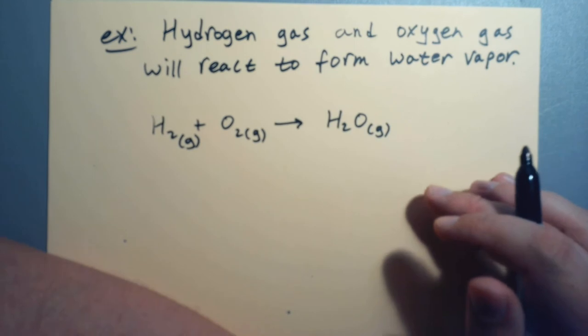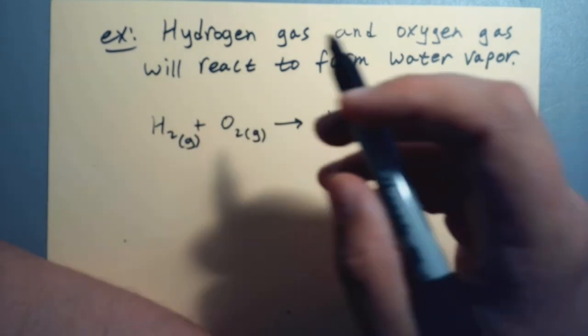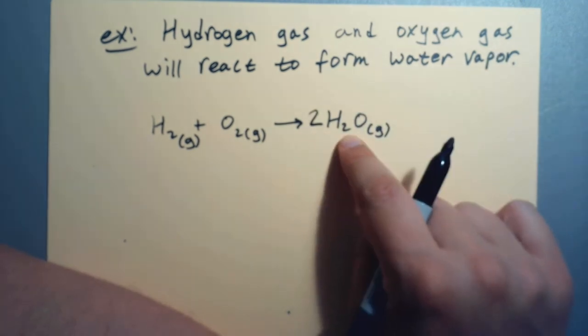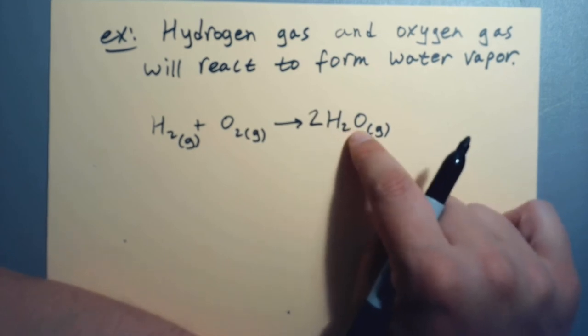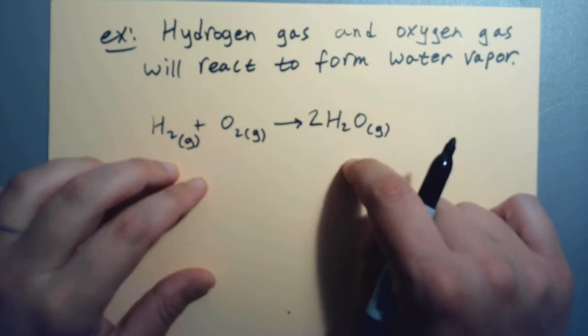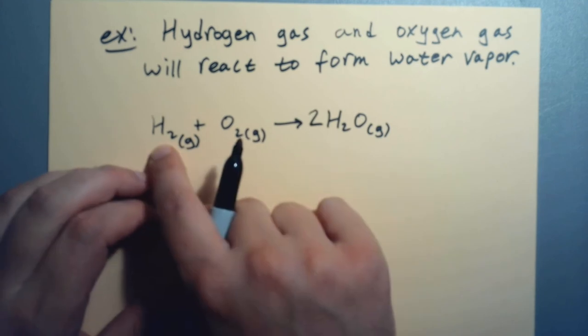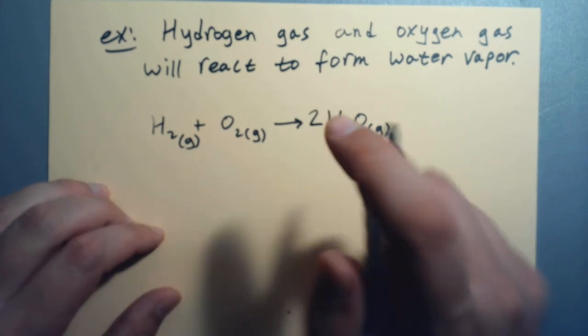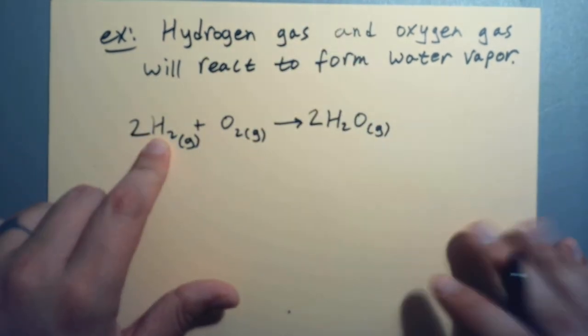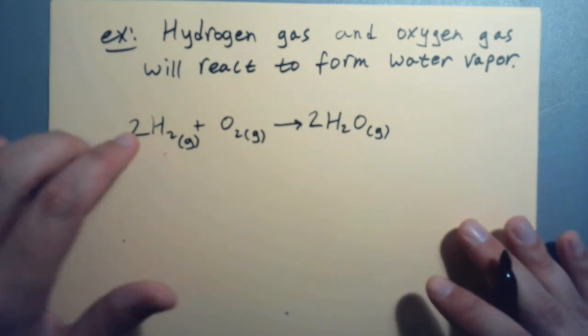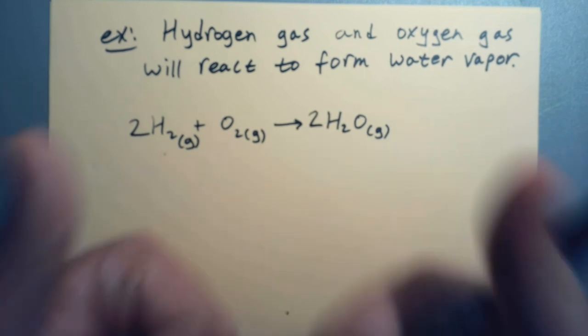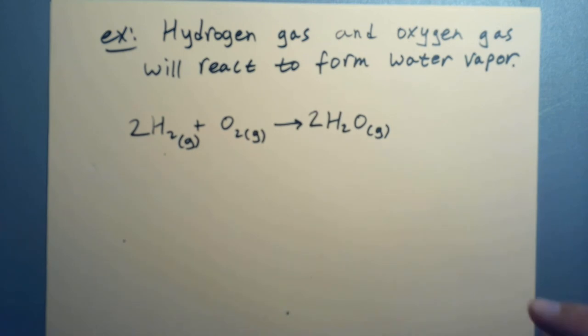What do I do? We have these things called stoichiometric coefficients. Essentially what I can do is make two waters. That big two in front means there's two waters. Now I have two oxygens on the right because I have two waters, each with one oxygen, giving me two oxygens. But now on the left I have two hydrogens, and on the right I now have four hydrogens. So I need two hydrogen gas molecules. Now I have four H's on the left, four H's on the right, two O's on the right, two O's on the left. That's balanced. All of my stuff I started with is accounted for.